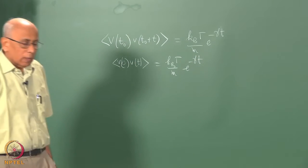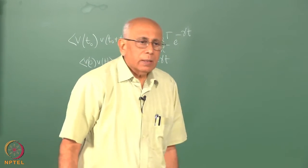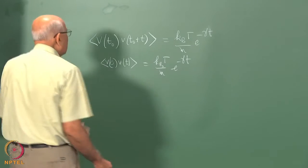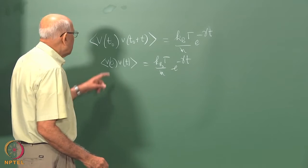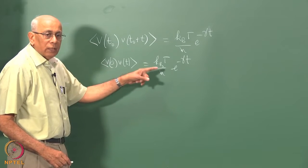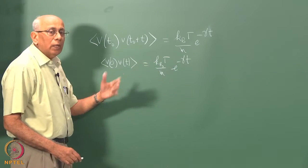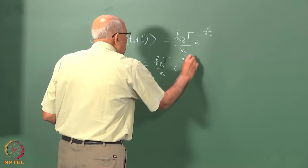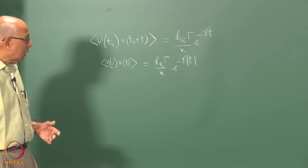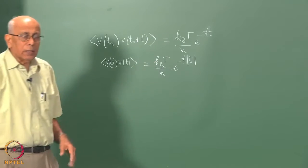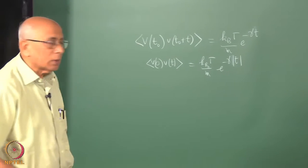Using stationarity, this very trivially implies that v(−t)v(0) gives us the same expression with a modulus on t. So in general this quantity satisfies a symmetric function in t and it dies down exponentially on either side of the t-axis in equilibrium.